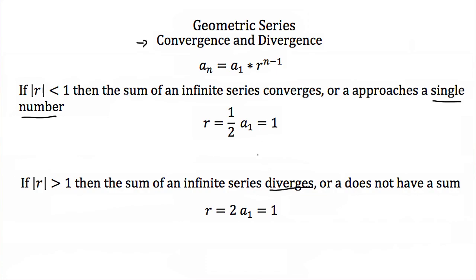To find out whether we can find a sum for an infinite geometric series, that depends on whether it converges or diverges. If it converges — approaches a single number — we say it's converging. If it does not approach a single number, we say it's diverging. The key is to look at your common ratio r: if the absolute value of r is less than 1, the series has an answer; if the absolute value of r is greater than 1, it does not.